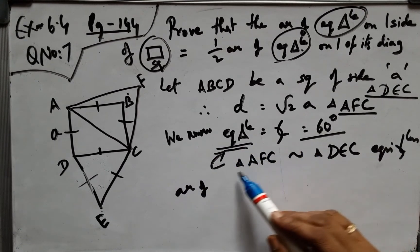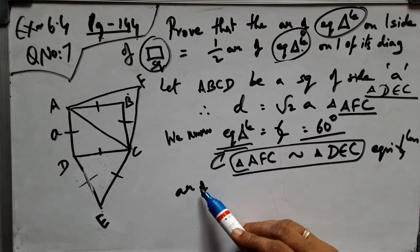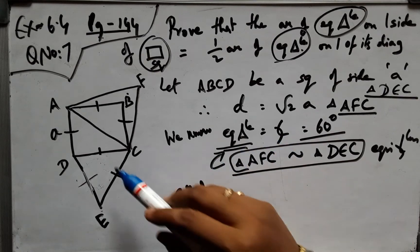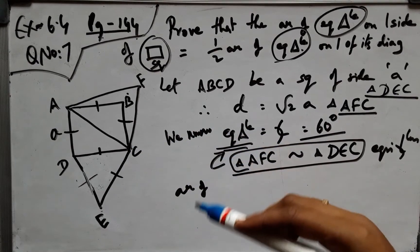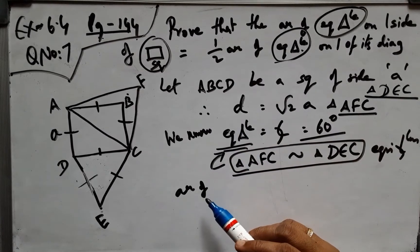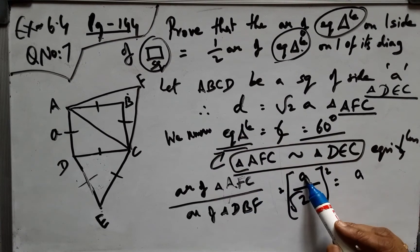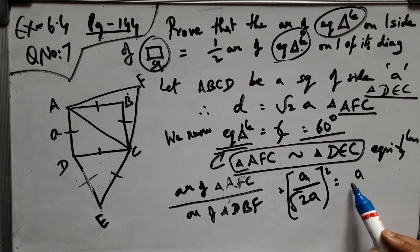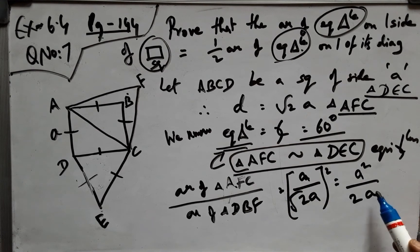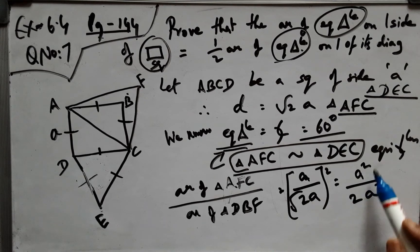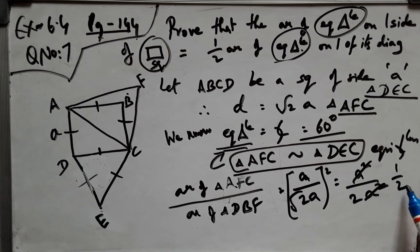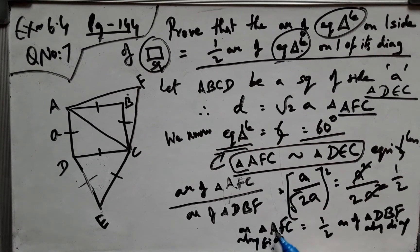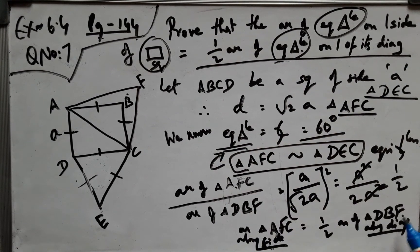So similar triangles property: areas of their respective triangles will be square of the ratio of the sides of these two triangles. Therefore, the side value, A squared by 2A squared, 1 by 2. So it is half. Area of triangle along this side is along the diagonal.